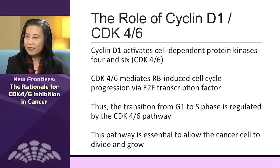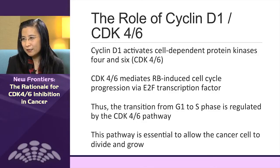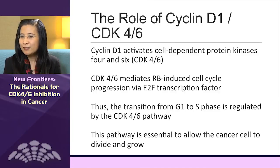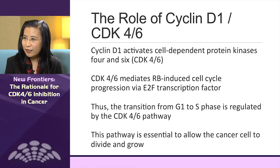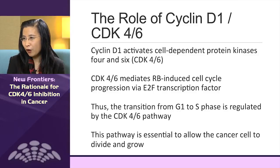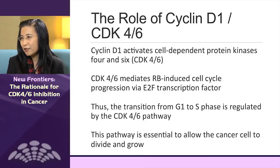What's the pathobiologic role of the complex? Cyclin D1 is a cyclin that activates cyclin-dependent kinases 4 and 6. Without cyclin D1, CDK4-6 will not be able to function. CDK4 and 6 are enzymes required for the transition from the G1 to S phase. S phase is an abbreviation for the DNA synthesis phase.